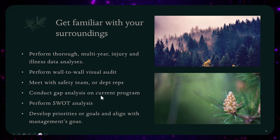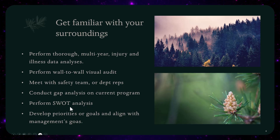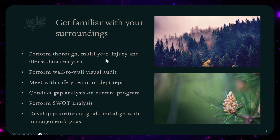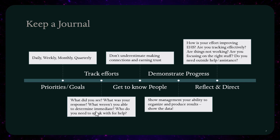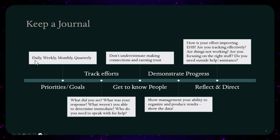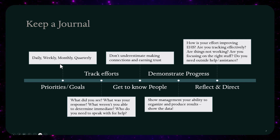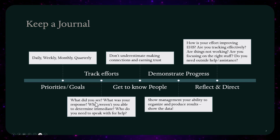Meet with your safety committee, safety team, or a rep from each department to get insight into who's experienced what and where things are going on — this all builds on what you've analyzed and seen. Then perform your gap analysis on the current program: what's there, what's currently in place, what major pieces are missing, and start working on that. Perform a SWOT — strengths, weaknesses, opportunities, and threats. Based on all you've done, begin writing priorities and goals and make sure they align with management's goals. A journal is what really saved me. I was writing things down hourly initially, then daily, then weekly.